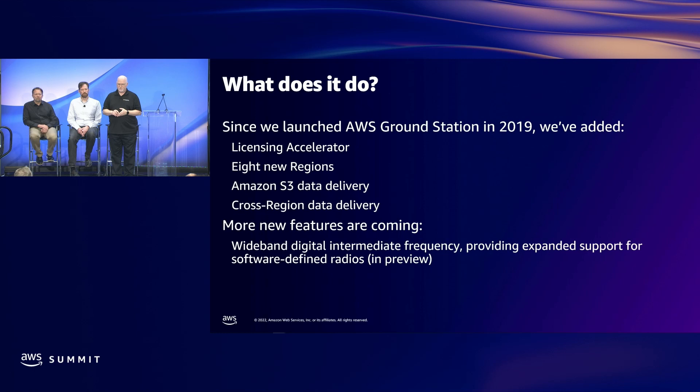We're always seeking to understand what customers want in our services, and these are a few of the features that we've launched in AWS Ground Station. We'll get into a bit more depth on these features later today — especially Amazon S3 data delivery, cross-region data delivery, and we'll talk a little bit more about Licensing Accelerator. Also, we have new features coming, and you can expect that to continue as we innovate on behalf of our customers.